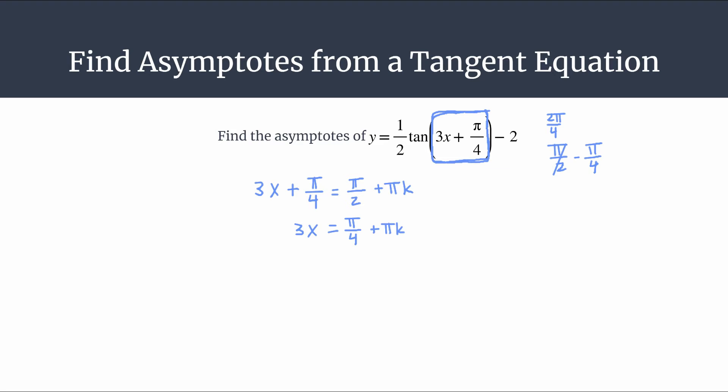The final thing we need to do to get our asymptote generating equation is divide both sides by 3. Make sure you divide every single term by 3. You can write it as multiplying by 1 third as well, whatever is best for you. And we get the equation x equals pi over 12 plus pi over 3k.